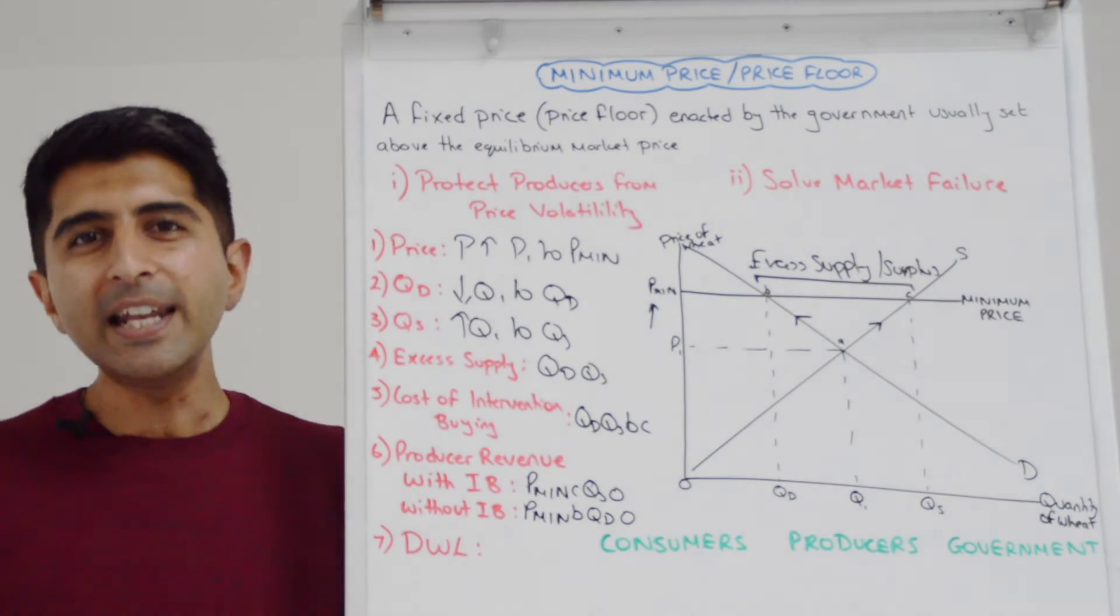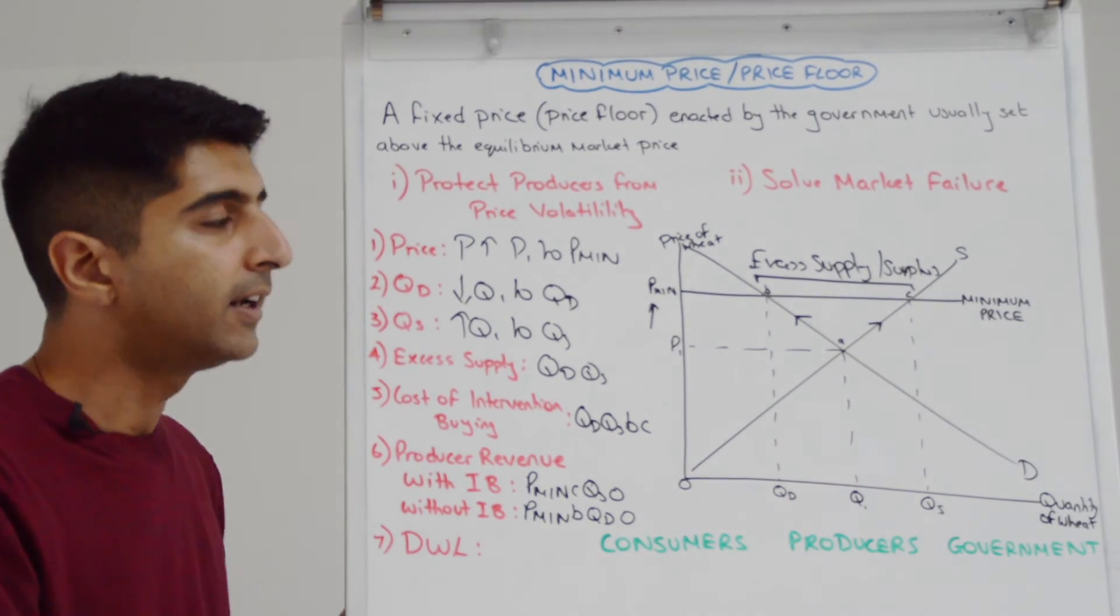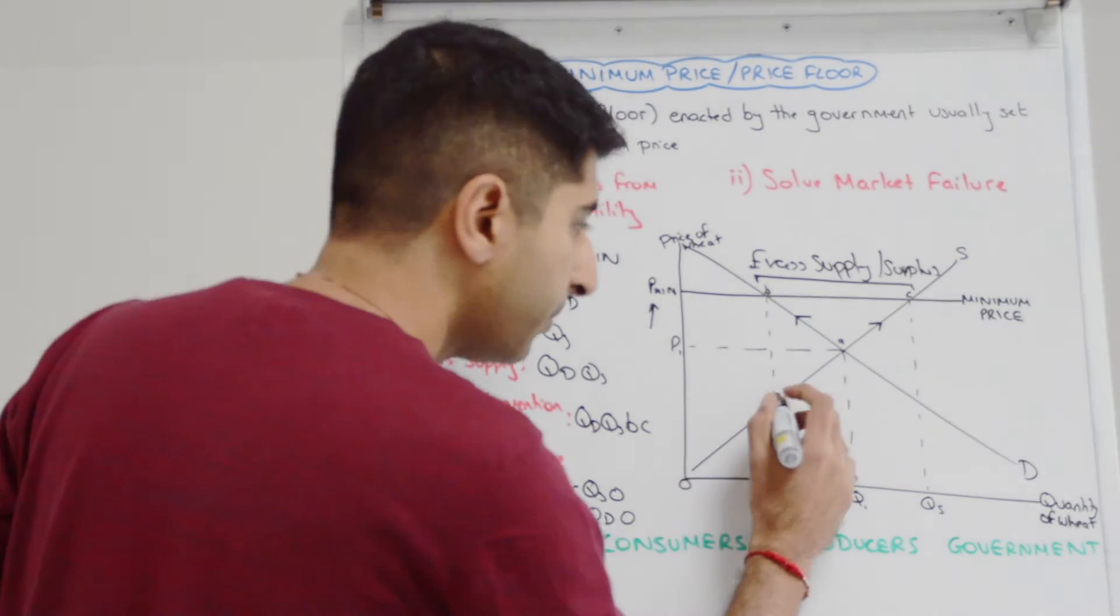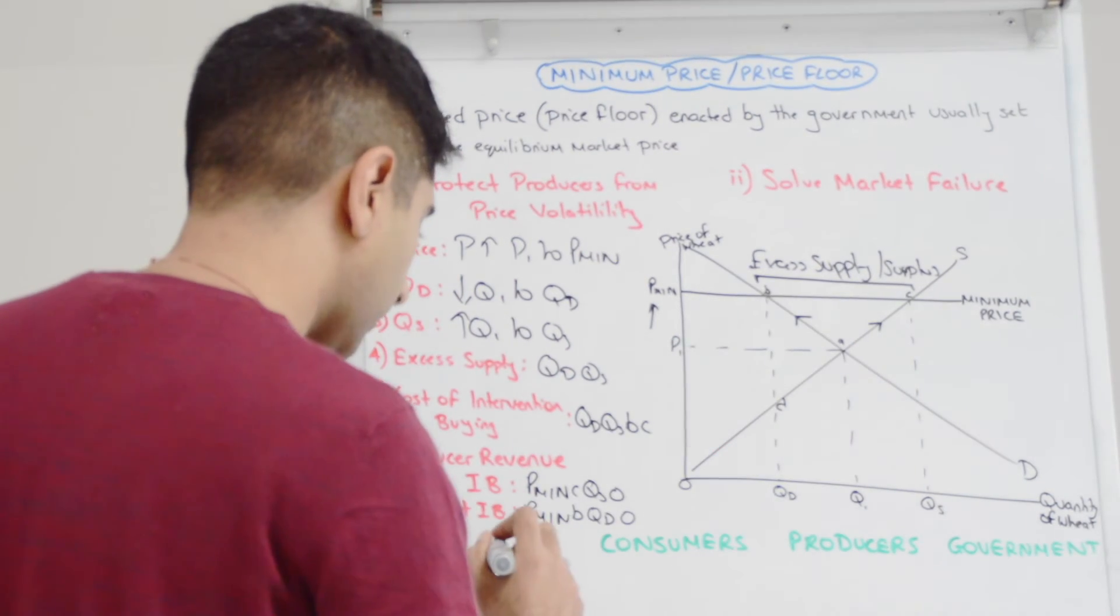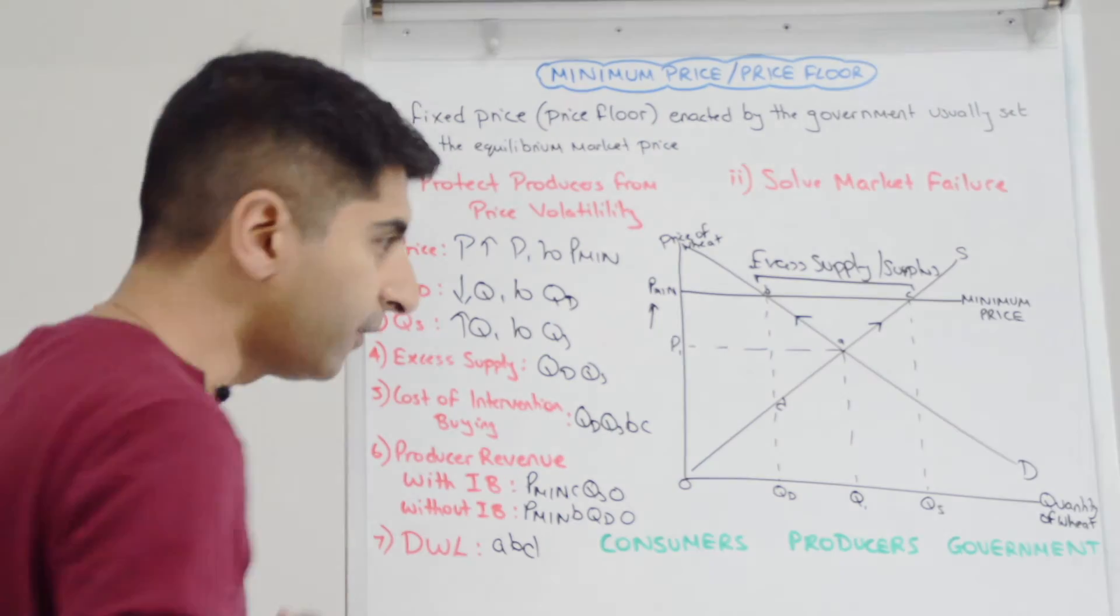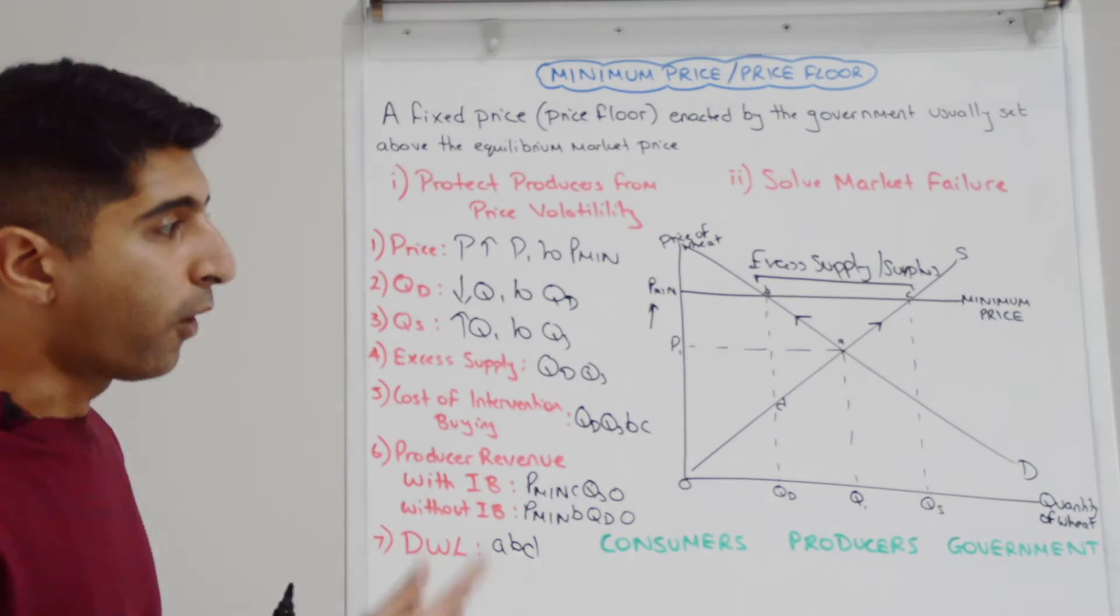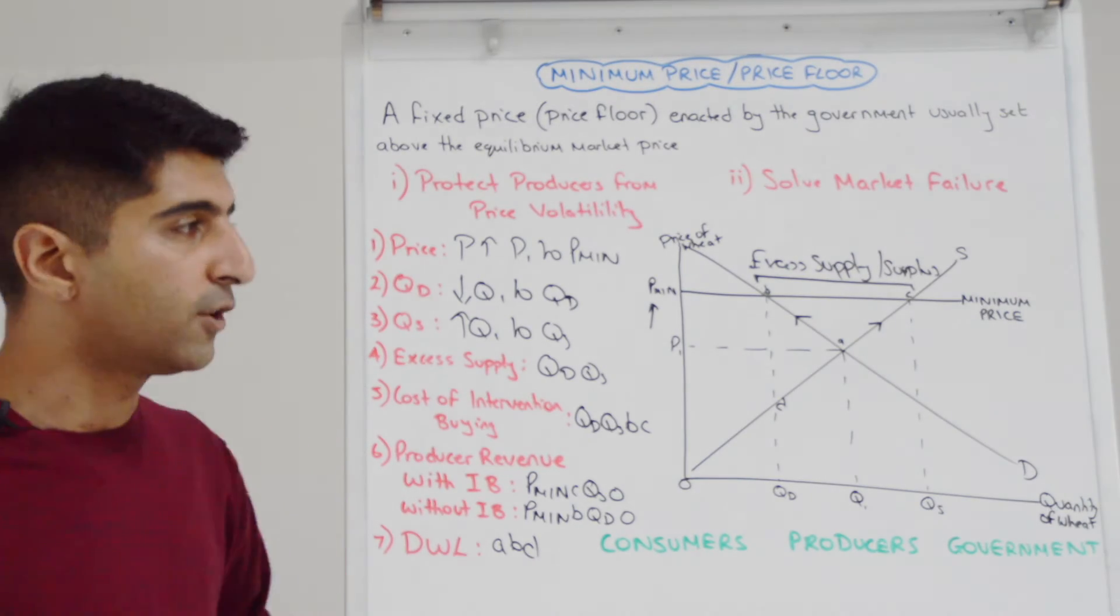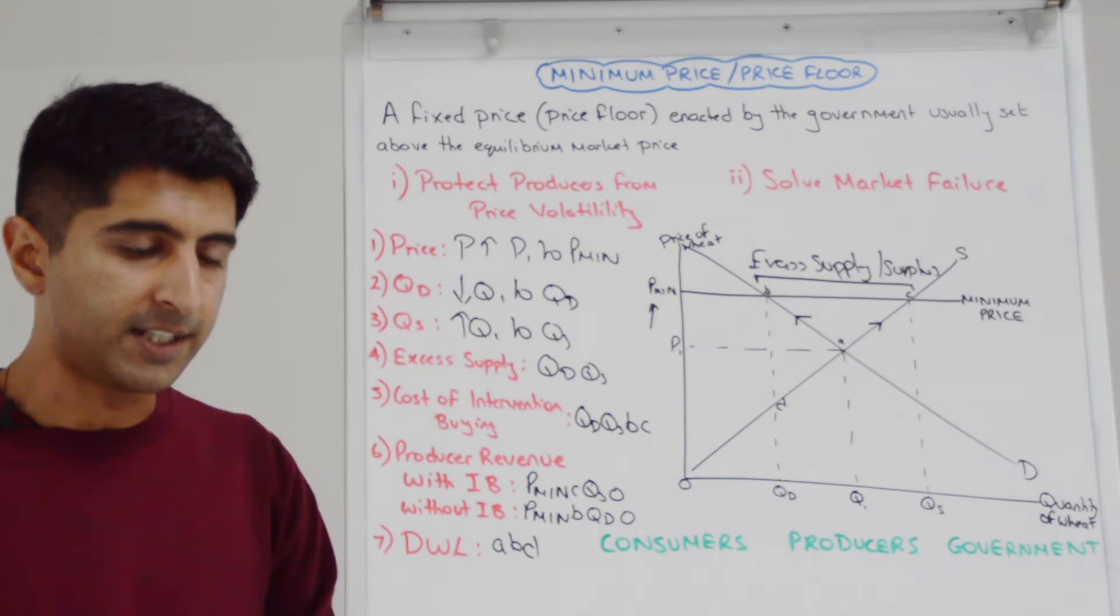But also by intervening like this, the government is actually creating a deadweight loss. Overall, the quantity in the market is much lower, and that's why there is a deadweight loss. If I put the label here, D, we can say the deadweight welfare loss is the triangle ABD. At this point, guys, I will say that if you click on this link over here, you'll see a video where I explain why there is a deadweight welfare loss and what the implications of that are. So feel free to click on that if you want to understand this in more detail.